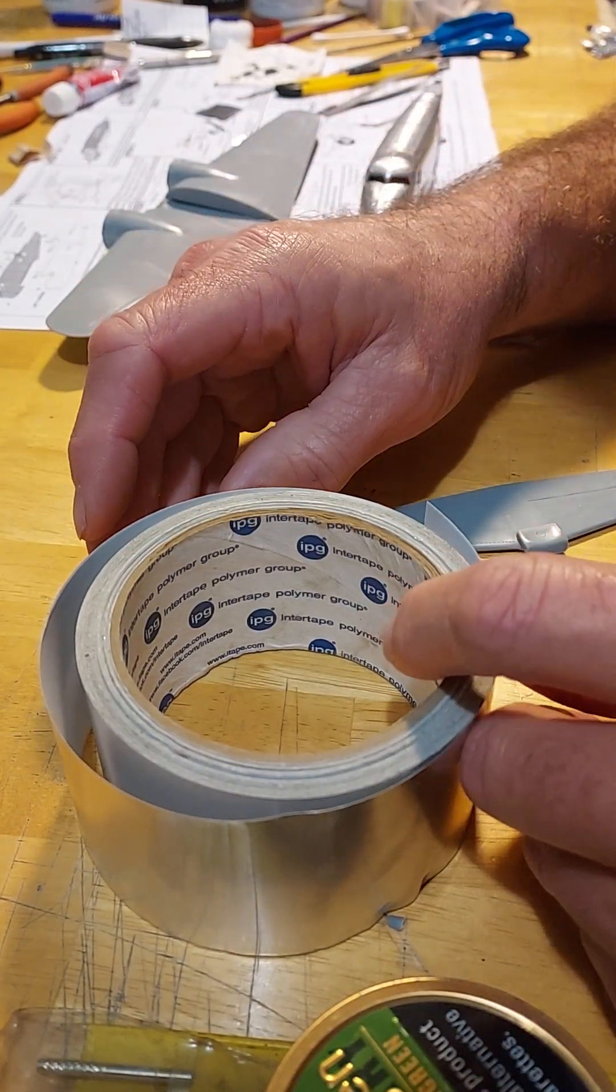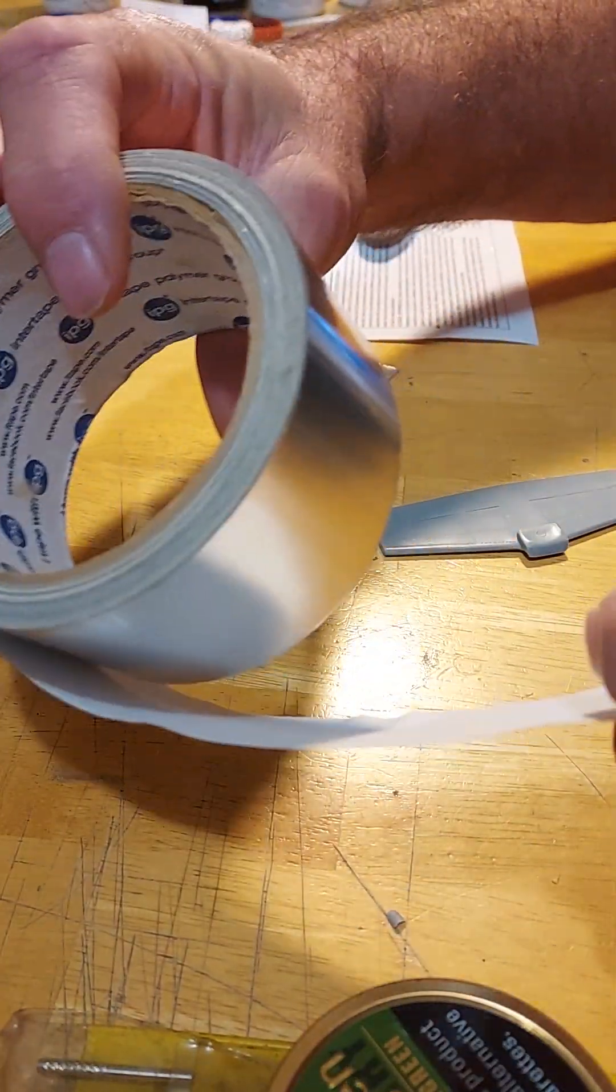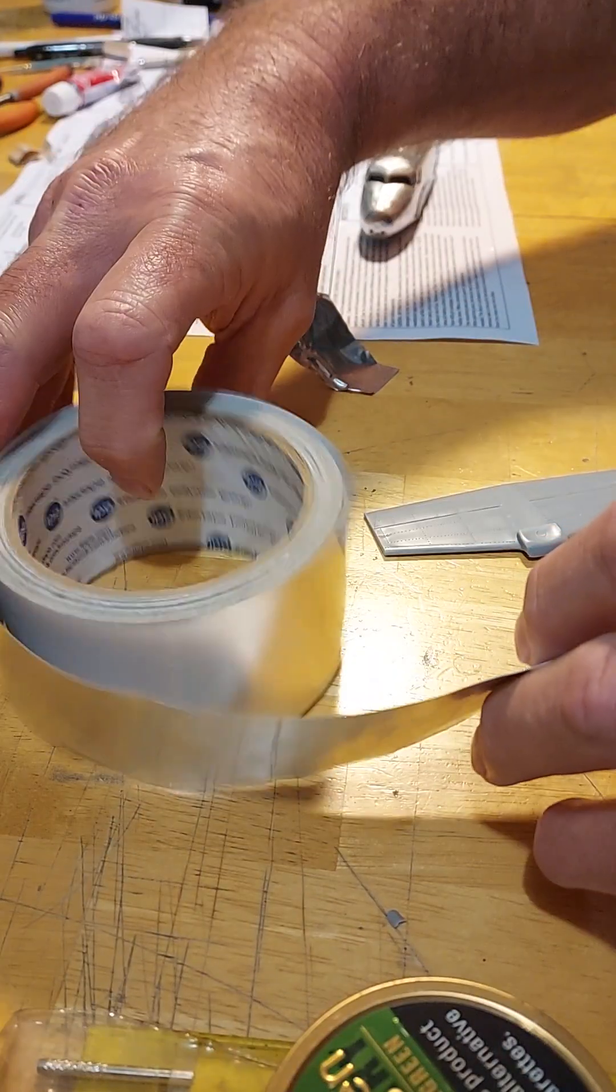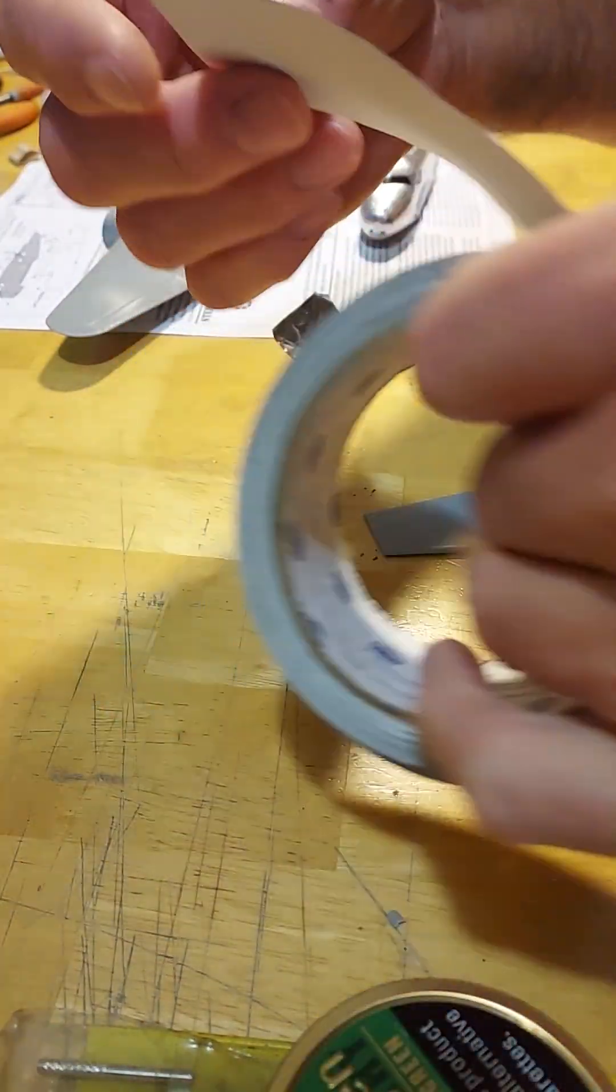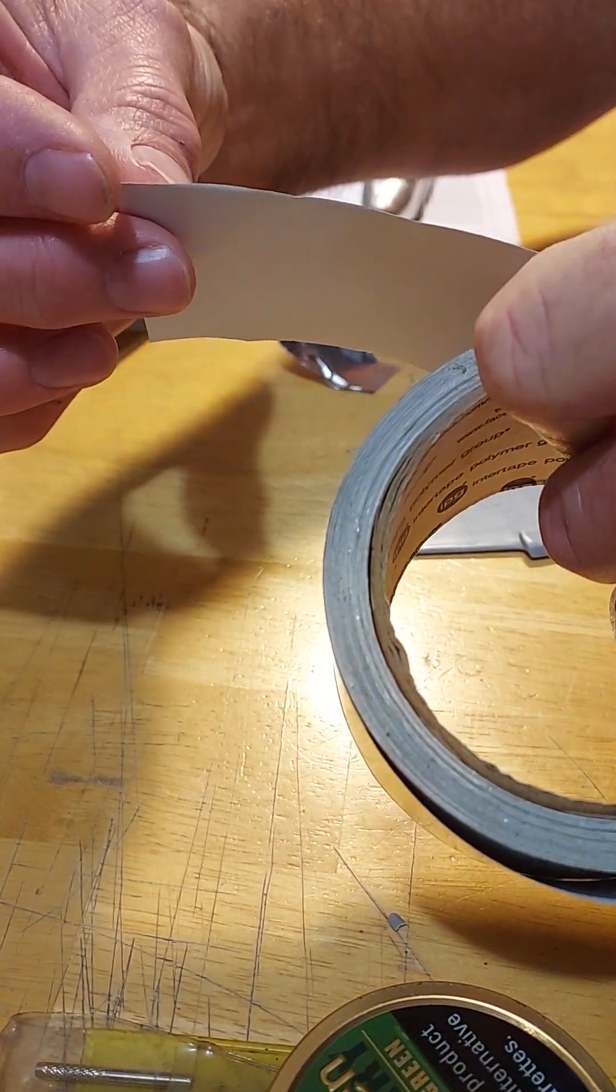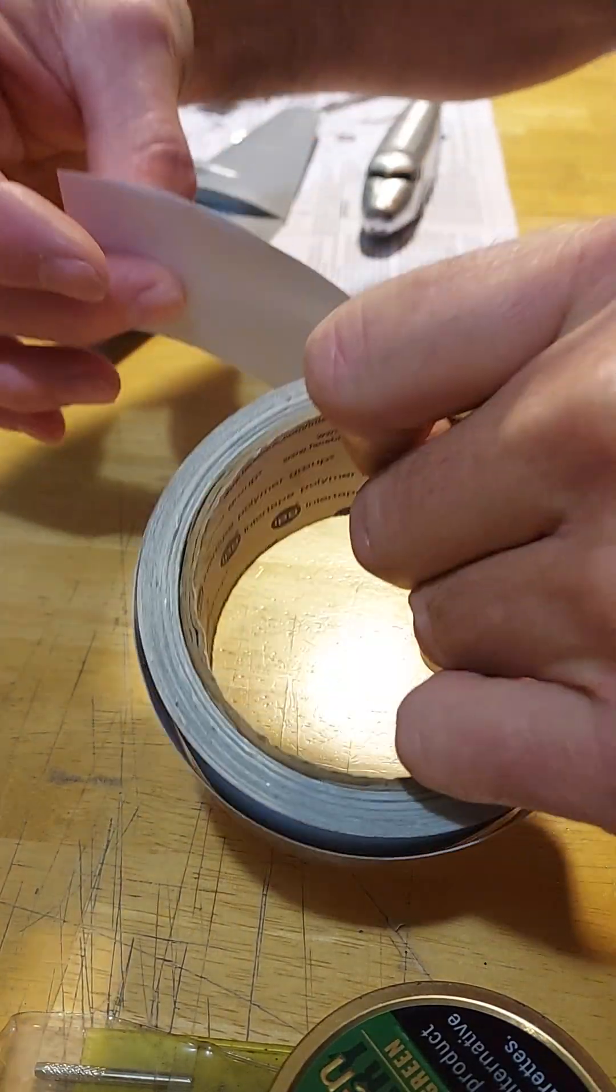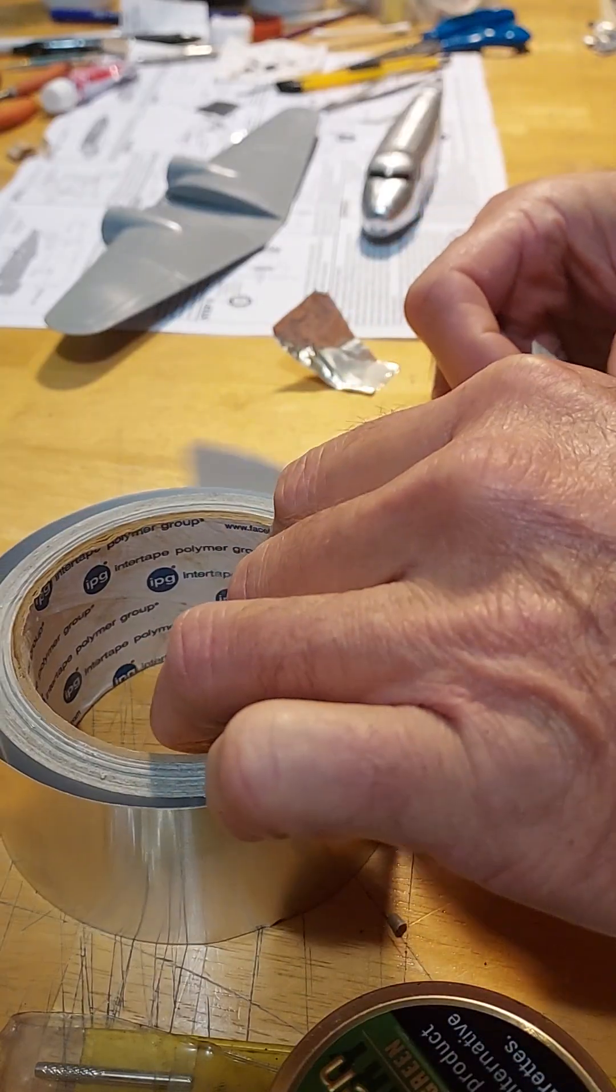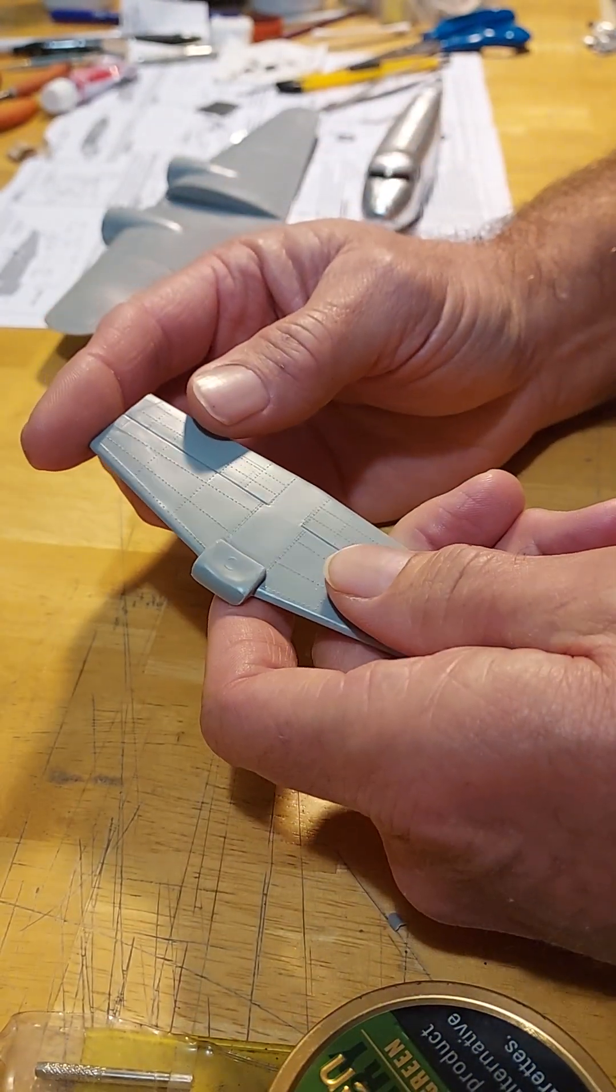Today is going to be a small tutorial on how to use HVAC tape instead of foil for skinning your model aircraft. The HVAC tape has a paper backing and you just peel it off and cut it to the size you want. I would suggest starting out small until you learn how to do this process very well.